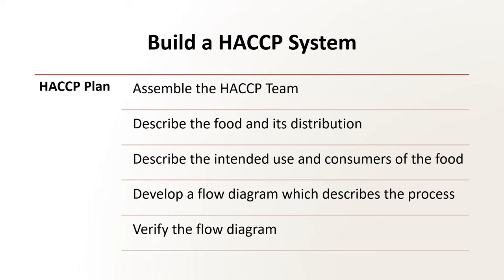The HACCP plans are prepared for each product or process and identify possible hazards and controls in place to make sure the hazards are prevented, eliminated, or controlled to ensure acceptable levels in the food product. To develop a HACCP plan, there are five tasks to accomplish before the application of the HACCP principles: assemble the HACCP team; describe the food and its distribution; describe the intended use and consumers of the food; develop a flow diagram which describes the process; and verify the flow diagram.